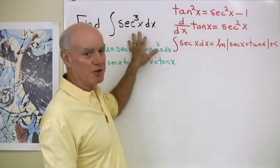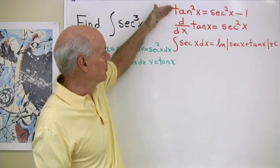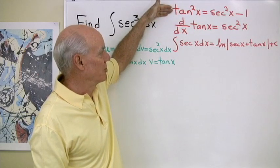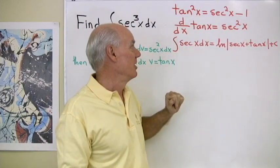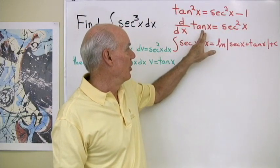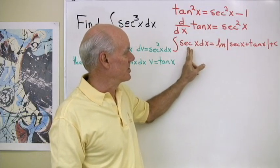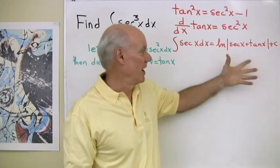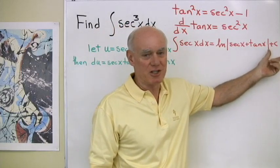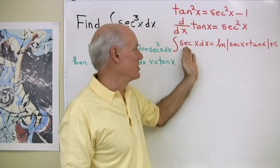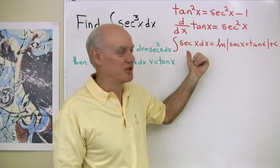As I'm integrating secant cubed x dx, these are some of the things I have in my toolbox. I know that tangent squared is secant squared minus 1, from the Pythagorean identity. I know the derivative of tangent is secant squared. If I integrate secant, I get the natural log of the absolute value of secant x plus tangent x plus c. So I can integrate secant, integrate tangent, differentiate tangent, and differentiate secant.